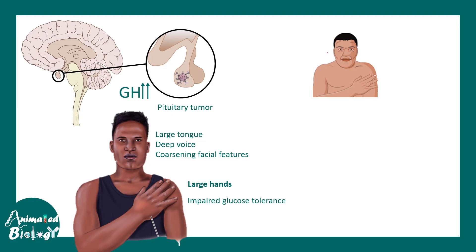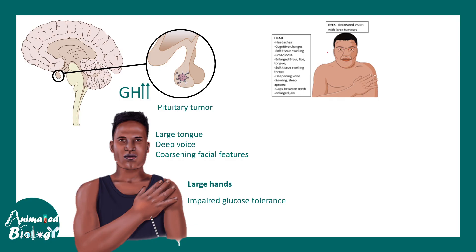There can also be defects at multiple levels. For example, in the head and brain there are problems such as frequent headaches, cognitive and IQ-related issues, and soft tissue swelling. These individuals also have a broad nose. Additionally, poor eyesight and impaired vision are common, and there can be skin thickening with oily and sweaty skin.